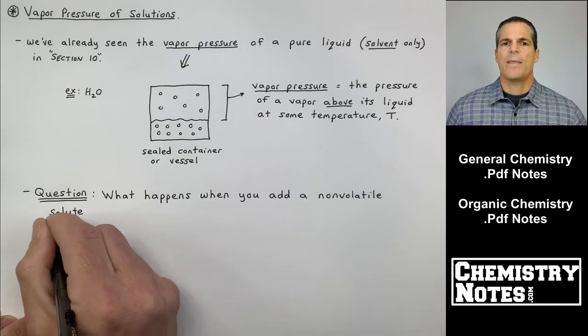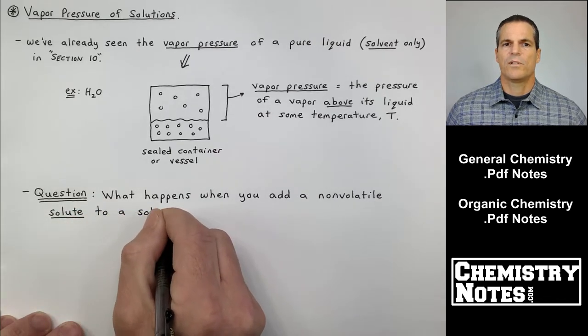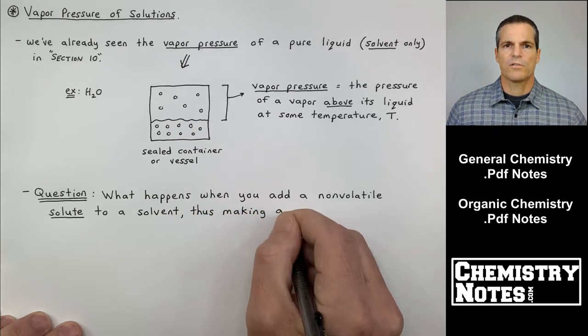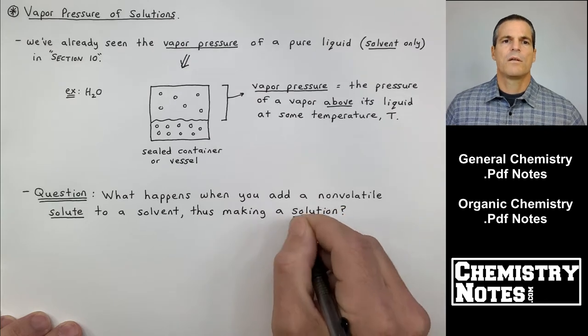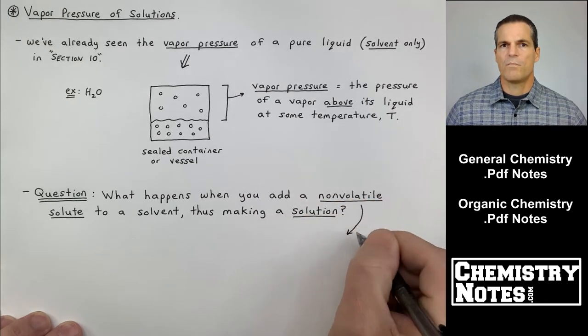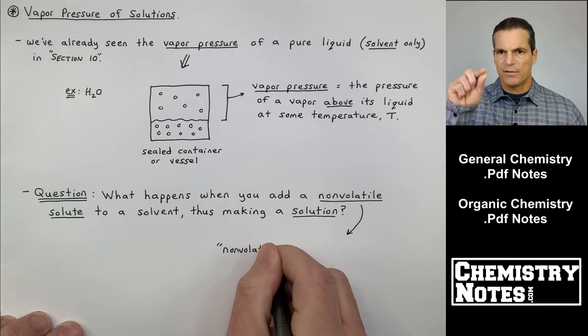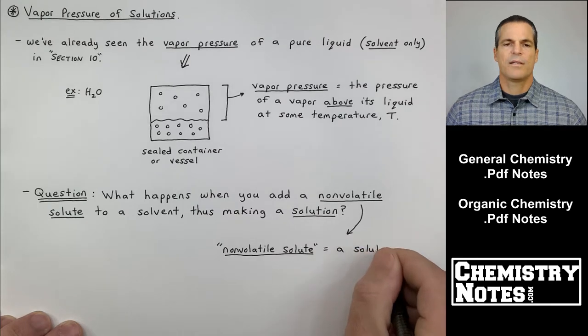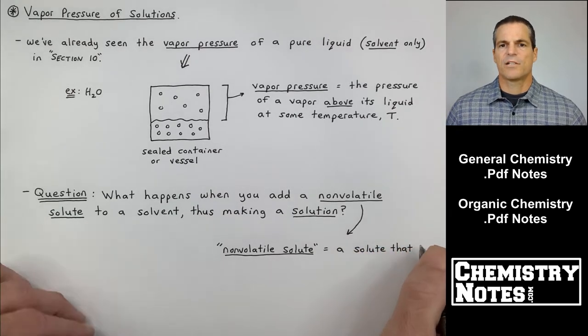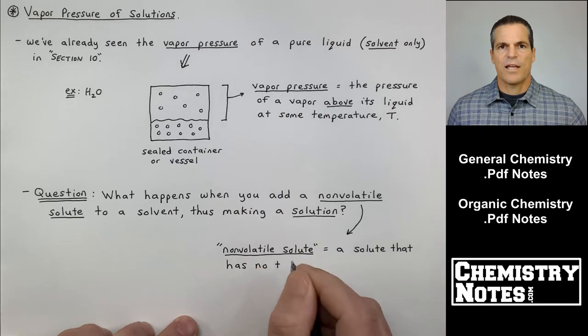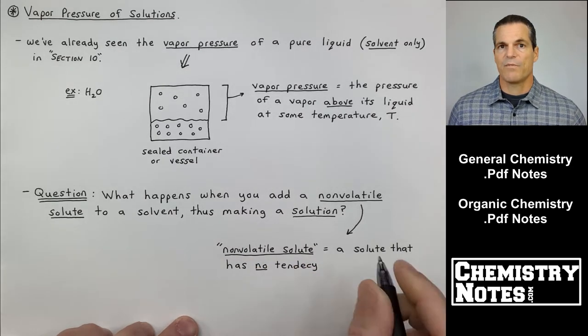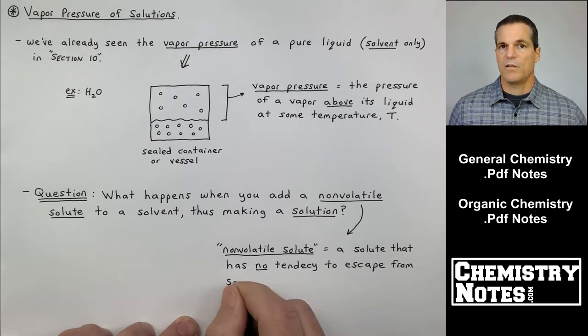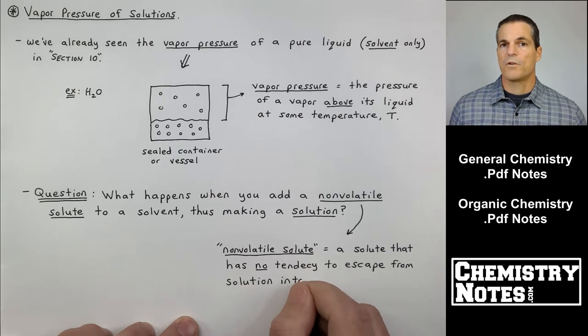Question. What happens when you add a non-volatile solute to a solvent such as water in the picture above? In that drawing above, those little circles, those circles I've drawn, those are just my way of drawing solvent molecules. Now I'm going to introduce a dark circle which will be my solute. And a non-volatile solute, by the way, is just a solute that is going to stay home. It's going to stay in solution. It has no tendency to escape into the vapor phase.